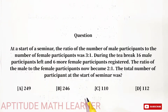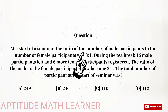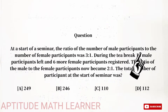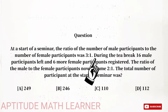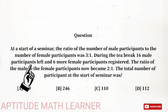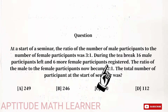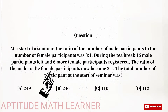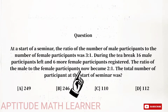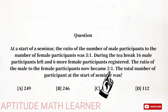The question today is: at the start of a seminar, the ratio of the number of male participants to the number of female participants was 3 to 1. During the tea break, 16 male participants left and 6 more female participants registered. The ratio of male to female participants then became 2 to 1.